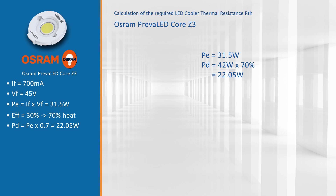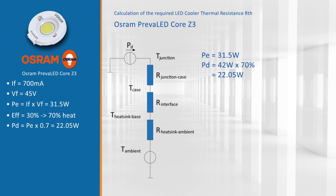Secondly, we look at the temperatures. We want to keep this module at a TC measurement temperature of 70 degrees Celsius, and we estimate an ambient temperature of our design of 35 degrees C. That means a difference of 35 degrees Celsius.